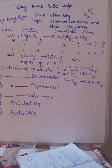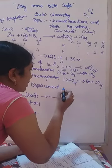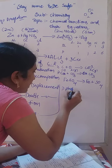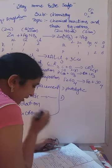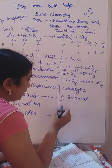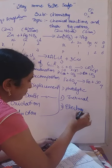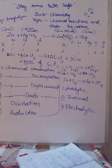There are mainly three types of decomposition reactions: (1) photolytic decomposition, (2) thermal decomposition, and (3) electrolytic decomposition.